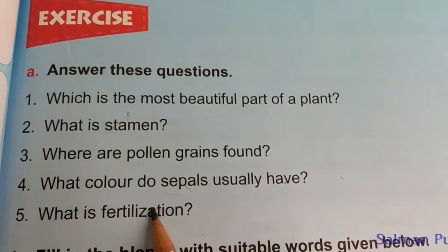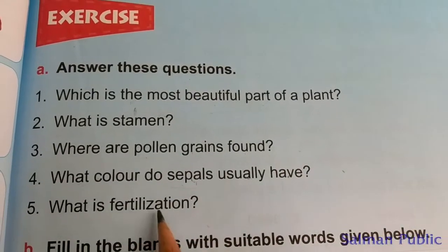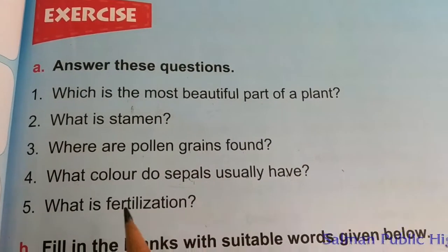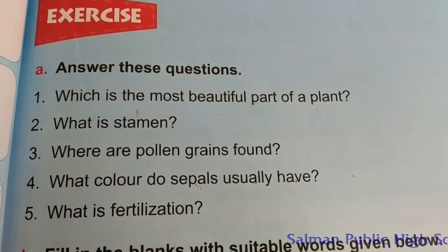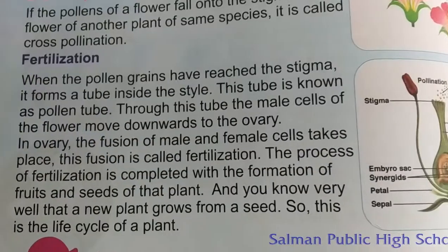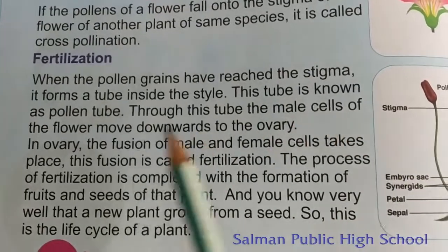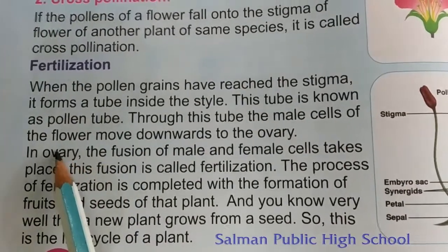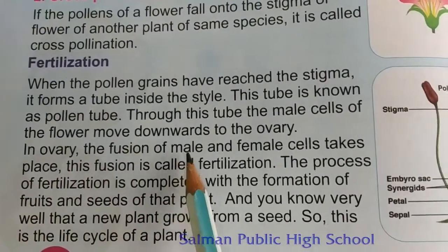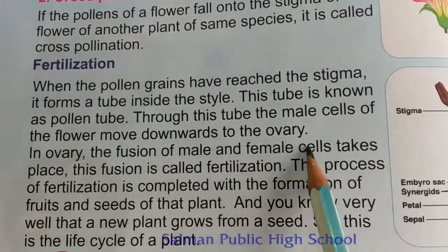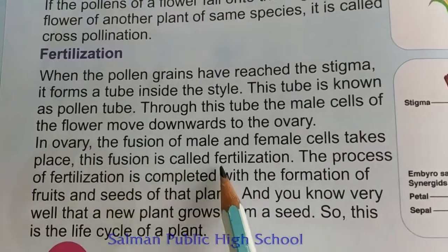Now question number 5 is: what is fertilization? In the ovary, the fusion of male and female cells takes place. This fusion is called fertilization.